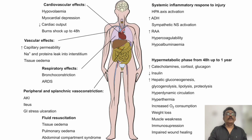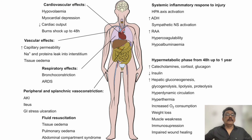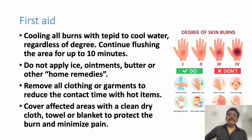Once the patient develops a burn, they lose large amounts of volume from the body. Systemic effects include hypovolemia, myocardial depression, reduced cardiac output, increased vascular permeability leading to vascular collapse and shock, bronchoconstriction, ARDS, acute kidney injury (mostly pre-renal), GI stress ulcers, and systemic inflammatory response. Fluid resuscitation is required in all these conditions. A hyper-metabolic phase can also occur as a long-term effect.